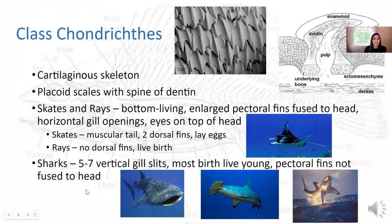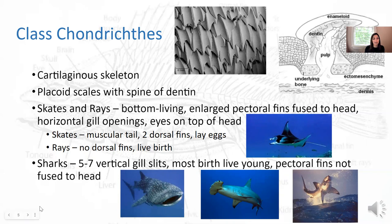Sharks, on the other hand, are not flattened. They don't have the pectoral fin fused to their head. They have vertical gill slits — five to seven. Most of them have live young, but there's variation within sharks. Examples include whale shark, hammerhead, and great white.